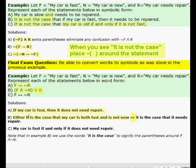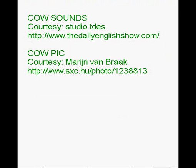In part C, probably a little simpler than part B, the statement is F with the if-and-only-if arrow and then negation of R. So that is my car is fast if-and-only-if it does not need repair.